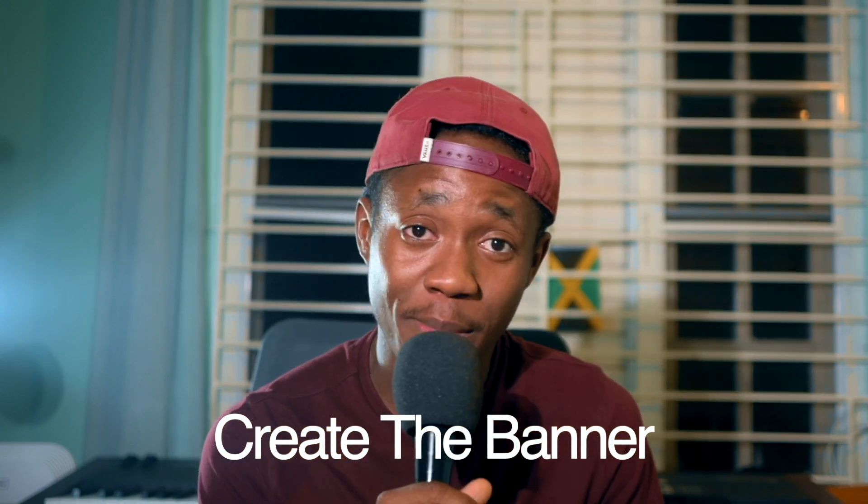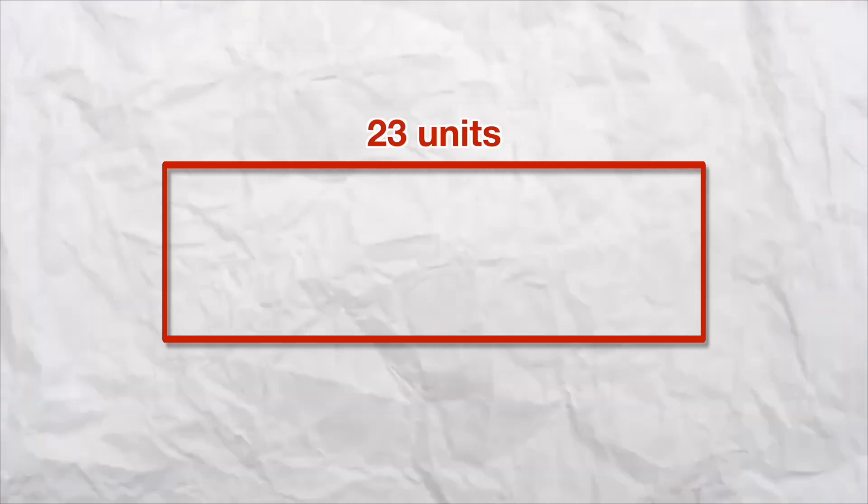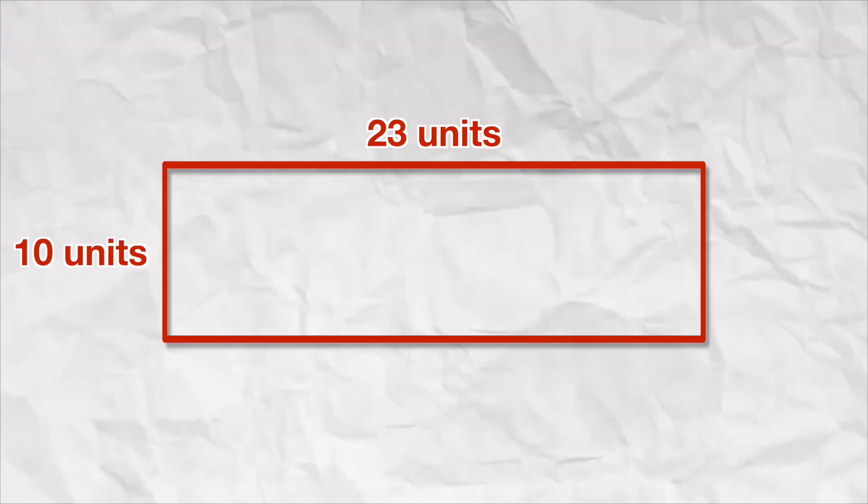So step one is to create your banner. Regardless of which software you're using — whether it's Photoshop, Affinity, Photopea, Gimp, or Microsoft Paint — you're going to need to set your canvas to have an aspect ratio of 23:10. This is extremely important. You can use any resolution in that aspect ratio, but I would suggest going higher resolution for better quality — something like 6210 by 2700.